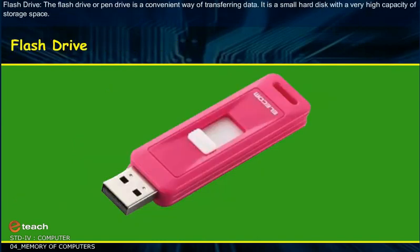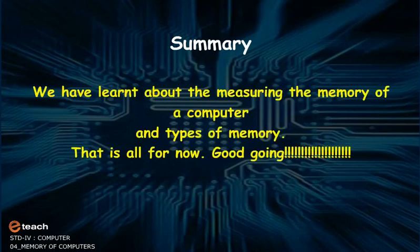Flash Drive: The flash drive or pen drive is a convenient way of transferring data. It is a small hard disk with a very high capacity of storage space. Summary: We have learnt about measuring the memory of a computer and the types of memory. And that is all for now — good going and keep learning!